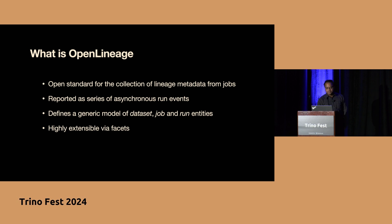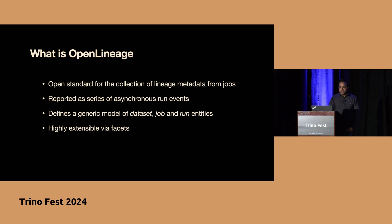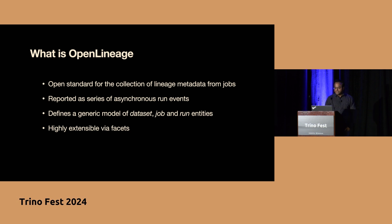That's where open lineage comes in. Open lineage is an open standard for the collection of lineage metadata from jobs as it is happening. The keyword is 'as it is happening' — we want to capture the lineage while the event is happening, while the data is in transit. Capturing it after the event is very difficult and has additional infrastructure cost. The open lineage standard defines a generic model for datasets, jobs, and run entities, and is highly extensible with the help of facets.